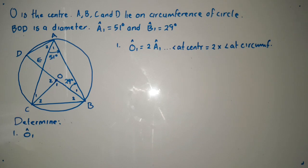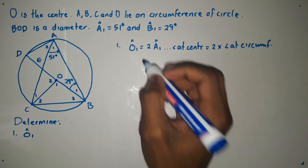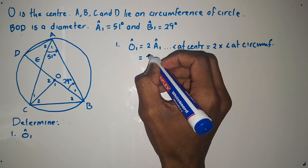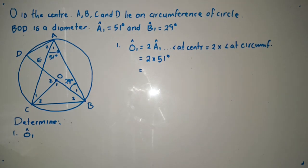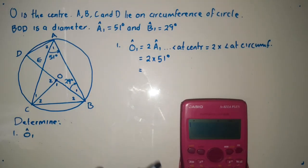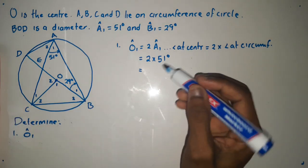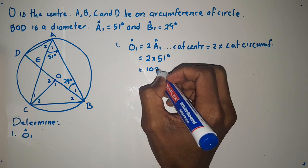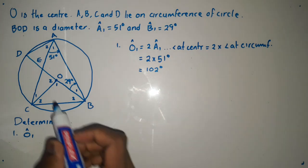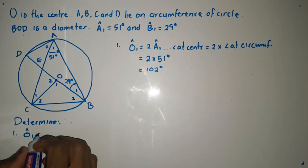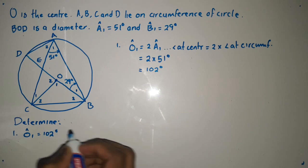Then immediately after doing this, we already have angle O1. Let us substitute: 2 multiplied by 51 degrees. We get 102 degrees. So angle O1 equals 102 degrees.